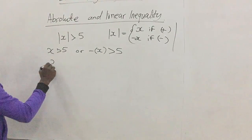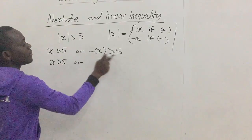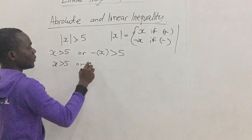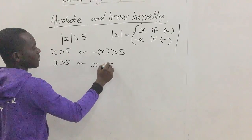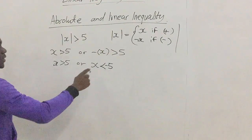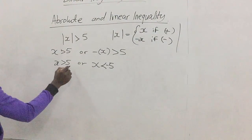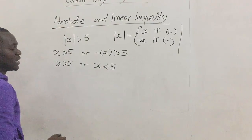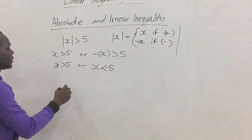So x is either greater than 5, or we divide both sides by the coefficient of x, which is negative one. When we divide by negative one, x becomes less than 5 with the negative sign, because we divide by negative one. So x becomes less than negative 5. Our solution becomes x greater than 5 or x less than negative 5.